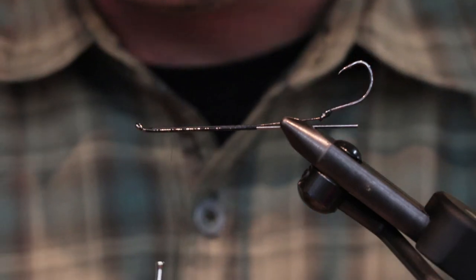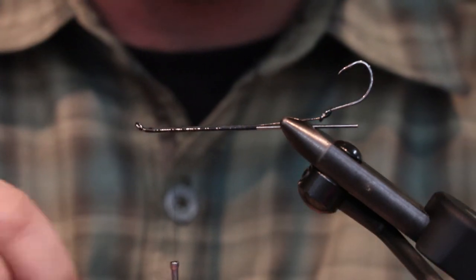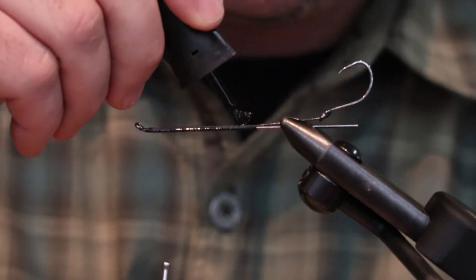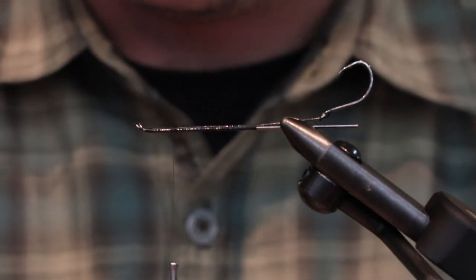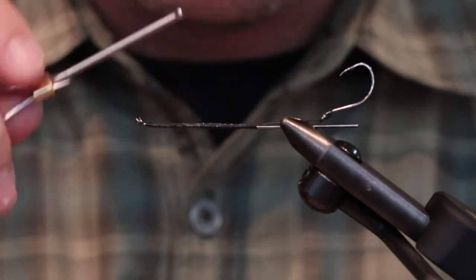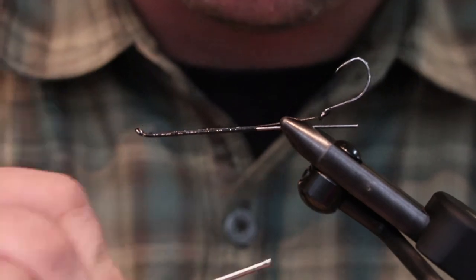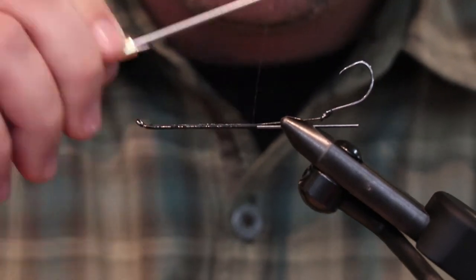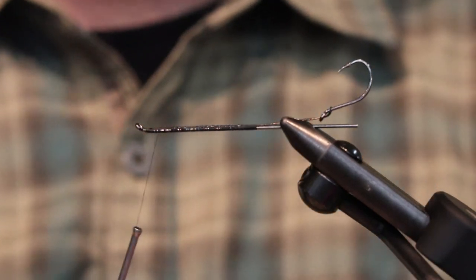If you want to double it over, go ahead. The other option is just to put a quick little dab of super glue on it. That works too, and that will secure it that much more. I typically don't do that, but I got the super glue sitting right here, so why not, just for demonstration purposes. But there you go, that's how it's done.